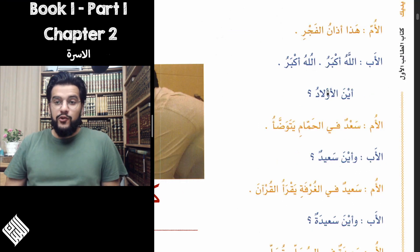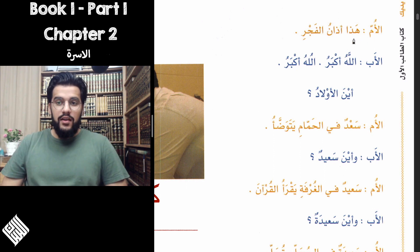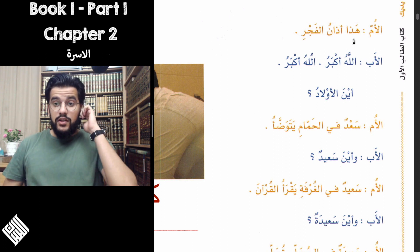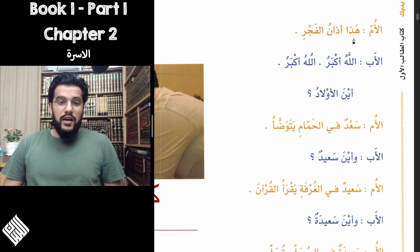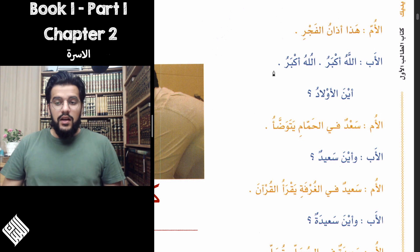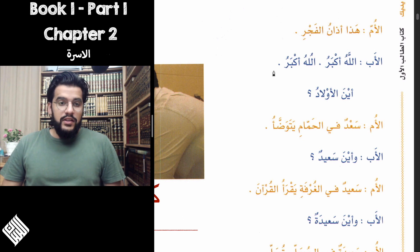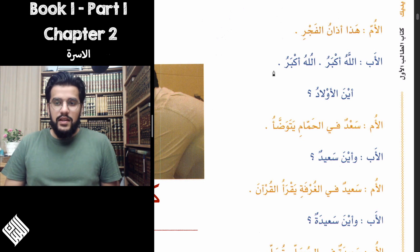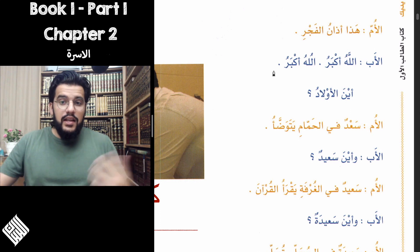Now let's figure out what they're talking about. The mother started the dialogue saying هذا أذان الفجر — this is the adhan for the Fajr prayer. Apparently the adhan was going on at the time. And the father says الله أكبر الله أكبر. The word أكبر is derived from the word كبير which means big or great, so Allah is the greatest. He's basically repeating after the mu'adhdhin, after the adhan, because it's highly recommended to do so. Then he asks أين الأولاد؟